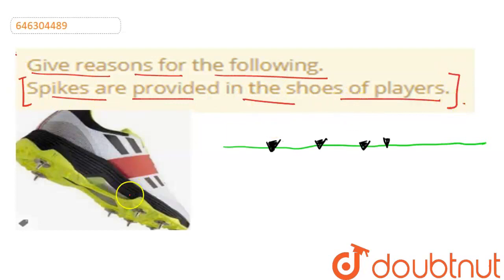So we will tell you that the spikes are pointed or sharp. We have seen that it gives us the proper grip. We can run properly without slipping. So how do we do this?